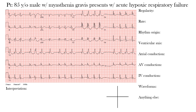Hello, welcome to the EKG Guide and welcome to the EKG of the Week. This week's case is an 85-year-old male with myasthenia gravis that presents with acute hypoxic respiratory failure. His recent EKG is shown here.